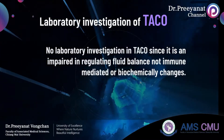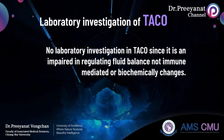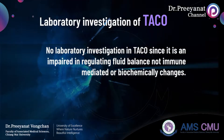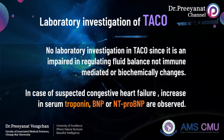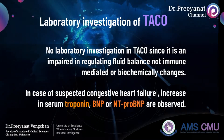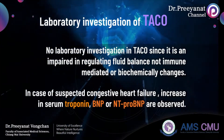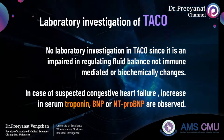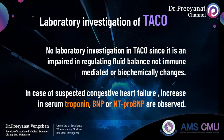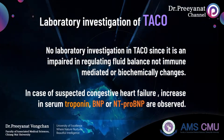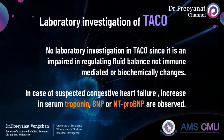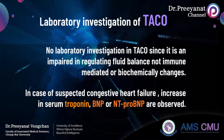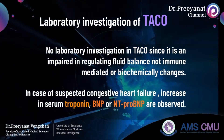There is no specific laboratory investigation for TACO because it is non-immune mediated with no biochemical changes. However, in cases of suspected congestive heart failure, increases in serum BNP and troponin are observed. BNP, or brain natriuretic peptide, is used to differentiate TACO from TRALI. A post-transfusion to pre-transfusion BNP ratio of 1.5, with a post-transfusion level of at least 100 pg/mL as a cut-off, provides more than 80% sensitivity and specificity for TACO. Some laboratories measure NT-proBNP because it has a longer half-life.